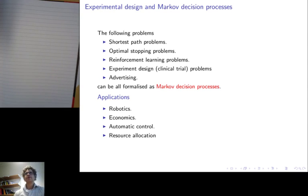Markov decision processes are a very general framework that can be used to model lots of problems such as shortest path problems, optimal stopping problems, reinforcement learning problems, experimental design problems and advertising. There are many applications of Markov decision processes, specifically robotics, economics, control and resource allocation.